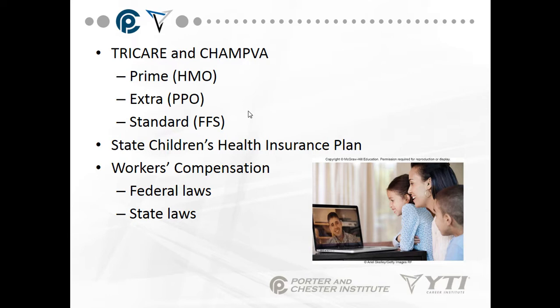The State Children's Health Insurance Plan — CHIP — was enacted in 1997 and reauthorized in 2009. It guarantees health insurance for children from birth to age 17 regardless of income. We also have workers' compensation, which is governed by federal and state laws for anyone hurt on the job where the injury is proven to have occurred due to the workplace.